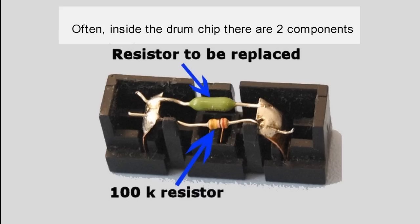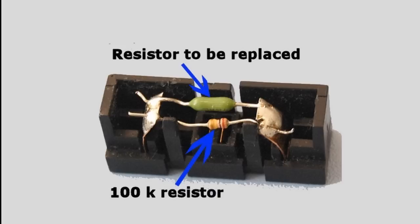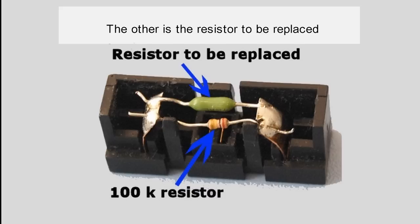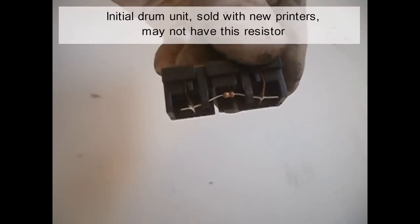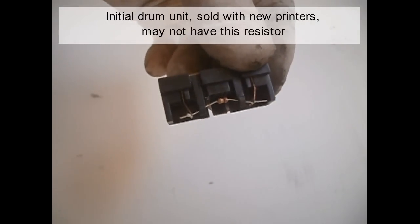Often inside of the drum chip, there are two components. The brown is a normal 100K resistor. The other, or without strips, is the resistor to be replaced. Initial drum units sold with new printers may not have the resistor.